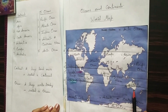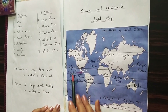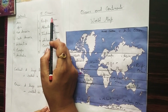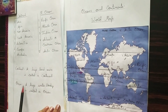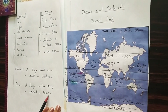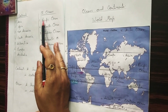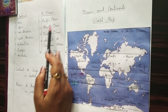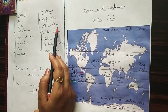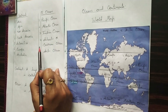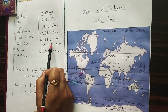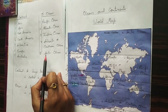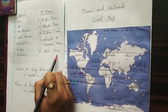This map also shows us five oceans. What is an ocean? A huge water body is called an ocean. The first is Pacific Ocean, the largest and deepest ocean. The second is Atlantic Ocean. The third is Indian Ocean. The fourth is Antarctic or Southern Ocean. The fifth and smallest is Arctic Ocean.